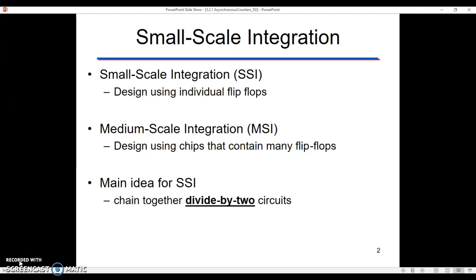The main idea for building counters with small-scale integration is you're basically going to chain together a series of divide-by-two circuits. And so what does that look like? If we can make a divide-by-two circuit with either a D flip-flop or a JK flip-flop, that means we can also create counters with these.